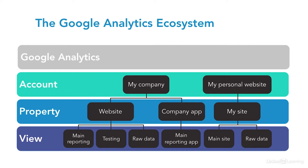In some ways, it's like you have a duplicate data set that tracks that same site, all coming from that one tracking code you put on, but they can be configured completely differently — and that goes for both the data and for the permissions that you're going to give users. Now, you can create up to 50 of these views. Every web property should have at least three views.